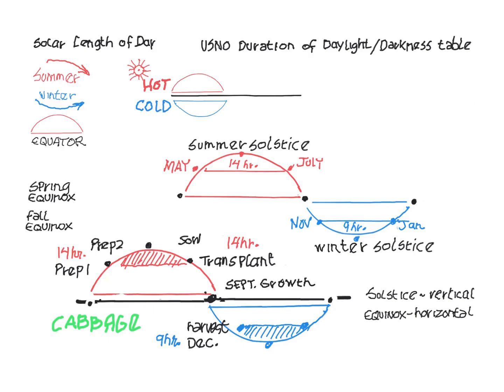Hello, my name is Dennis and this is a video about something known as the solar length of day (LOD). It's very useful when working with plants to understand some of the deeper aspects of plant growth. A search term 'USNO duration of daylight darkness table' leads you to the naval oceanographic portal where you can find a daily chart of the length of day throughout the year. You have to put in your latitude and longitude and their computer will print out a yearly chart of the length of day in your location.